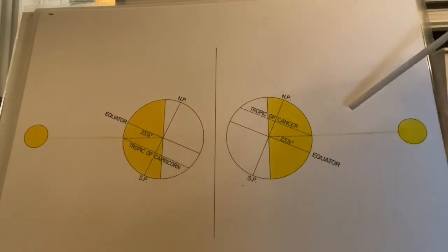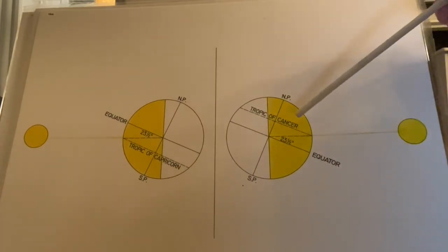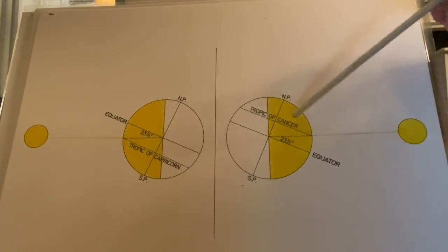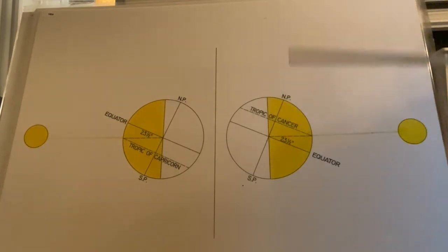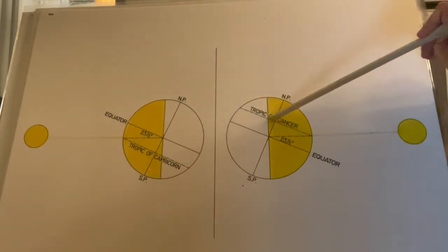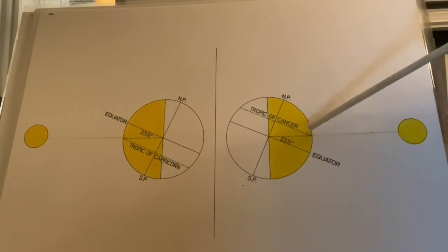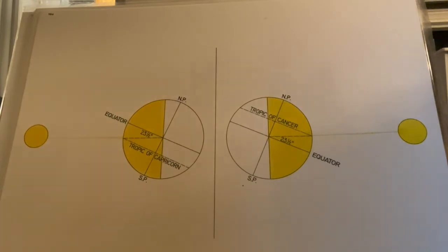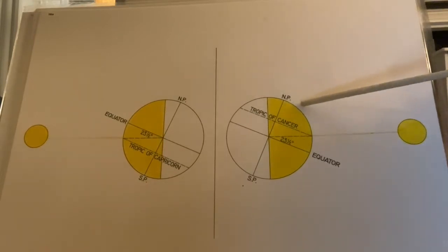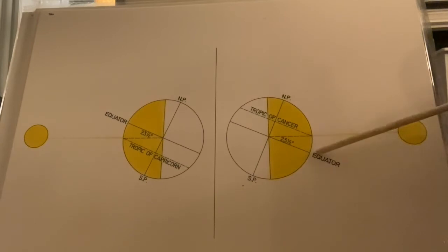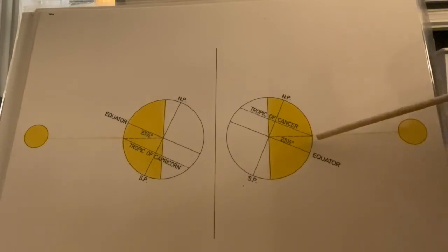When we look at the summer solstice, the Sun is now on this side. We are tilted towards the Sun. This line here is the furthest north that gets perpendicular rays of the Sun, and this line is called the Tropic of Cancer. Everything above it is getting oblique rays, and from here to the equator you're getting perpendicular rays.